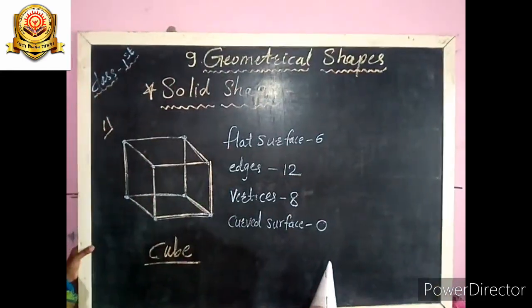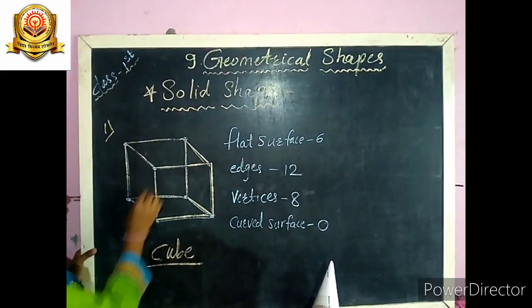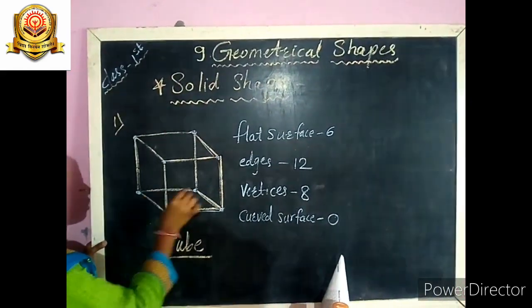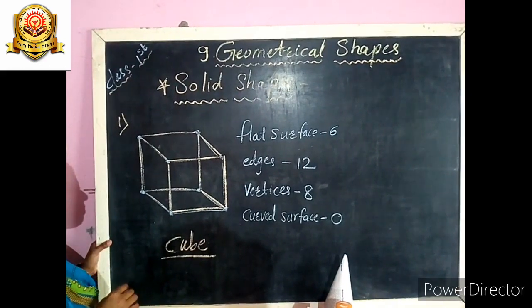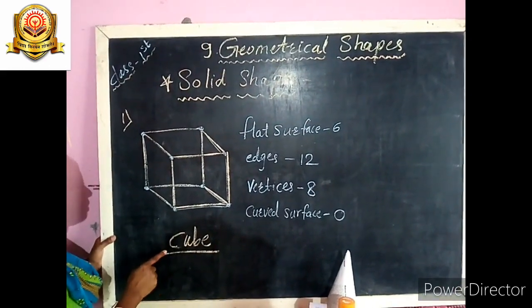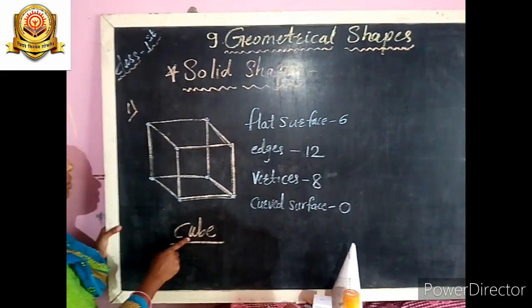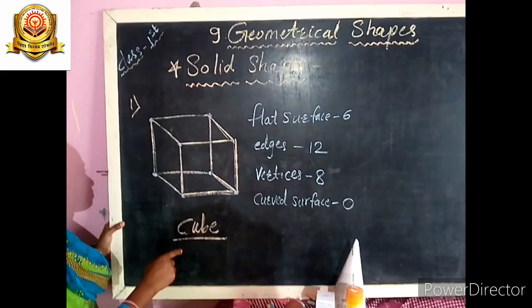And each face of a cube is a square — all faces are squares. The spelling of cube is C-U-B-E, cube.